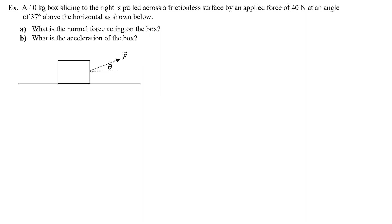A 10-kilogram box sliding to the right is pulled across a frictionless surface by an applied force of 40 newtons at an angle of 37 degrees above the horizontal as shown. What is the normal force acting on the box, and what is the acceleration of the box?